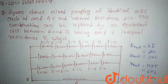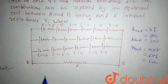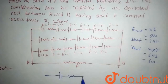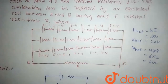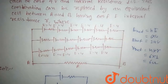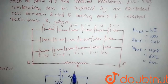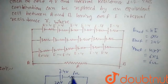In each branch the EMF will be 24 volt and internal resistance will be 6 ohm. This is the first branch, this is the second branch, and this is the third branch between A and B. So this is 24 volt, this is also 24 volt, this is also 24 volt, and each has 6 ohm resistance.